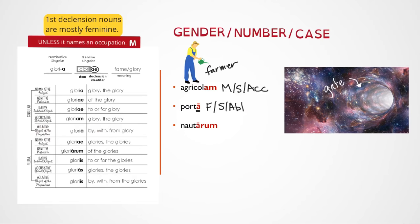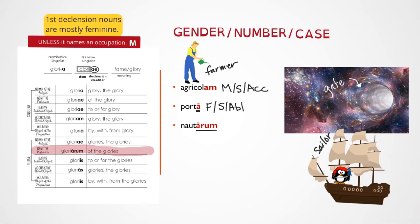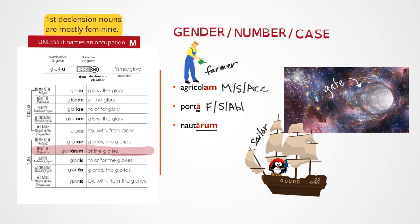Last word, natarum. So arum is our big ending — thankfully it's not very hard to find on our key. Let's check its gender. Natar means sailor. Sailor is another occupation, so this one is again going to be masculine. Now looking at our key, we see that it is plural, genitive. So identifying forms is really not too hard at all.